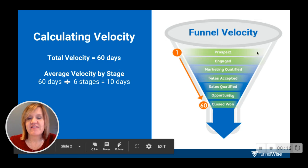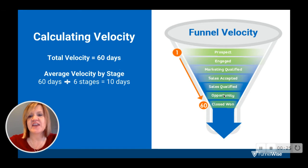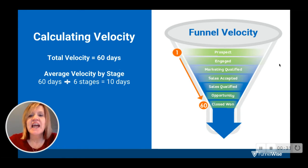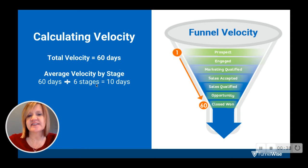On a very high level, funnel velocity calculates the speed at which a lead moves through your funnel. So day one, a prospect enters the first stage, then it goes through six stages to close. On average, that's 60 days. A lot of people will figure out their average velocity by stage and just take 60 days divided by six stages — 10 days per stage.